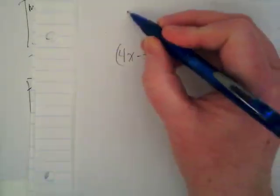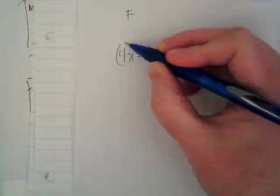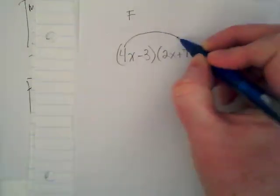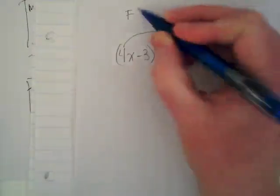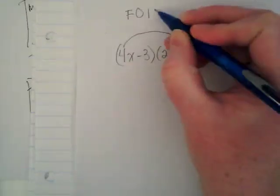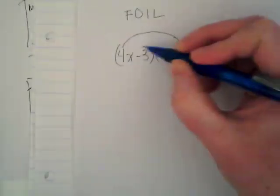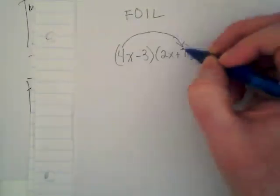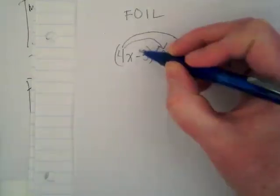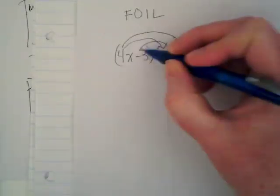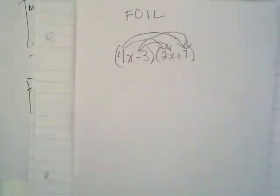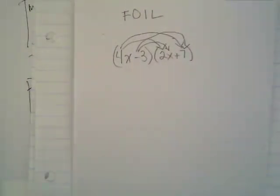This is called FOIL because it stands for first, outer, inner, last. And basically we're saying that this gets multiplied by this, and it gets multiplied by this, and this gets multiplied by this, and this also gets multiplied by this. Do you see how confusing that looks? We will start doing this with trinomials and it gets really messy.